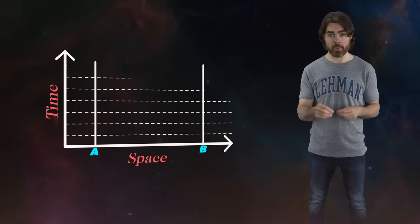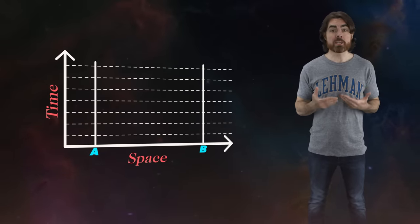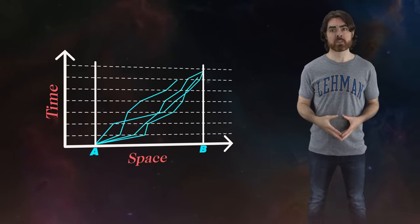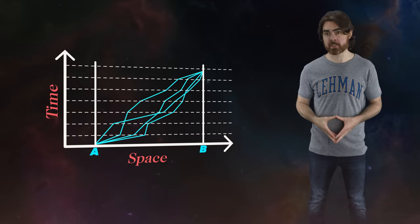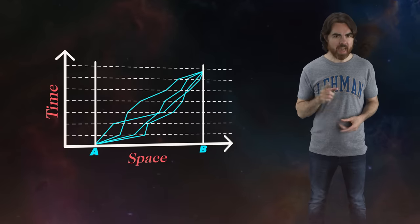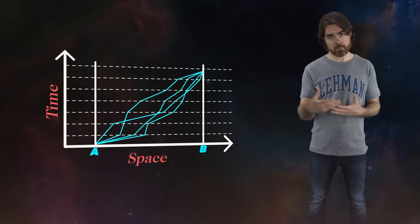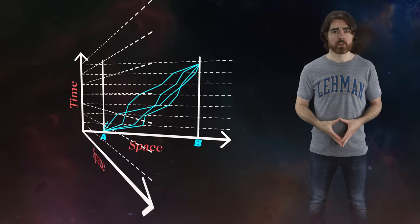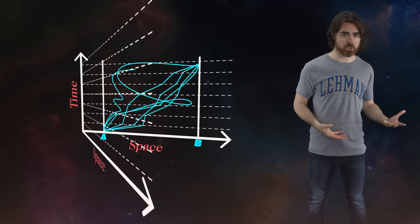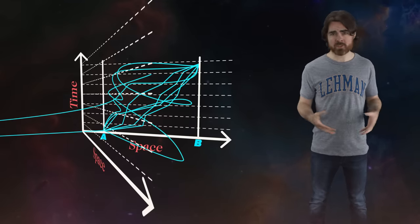His trick was to slice the time taken for the journey into small intervals, and at each time step allow the particle to take any conceivable straight-line step in space. That gives a set of paths from A to B — some of which look sensible, but most of which are ridiculous. For example, there are paths that loop in circles or take detours to the edge of the universe.